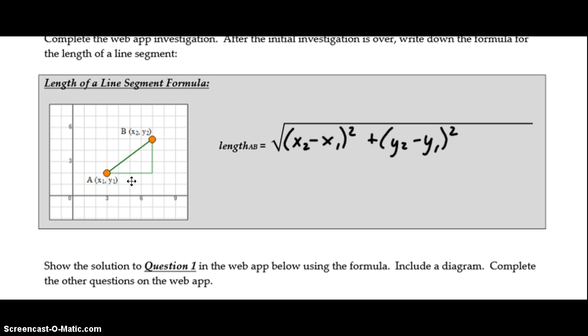From the investigation, hopefully you recognize that it's just an alternate form or a variation on Pythagorean theorem. So when we're finding the length of this line segment, ultimately it's the length of the hypotenuse where the other two sides are simply our rise and our run.